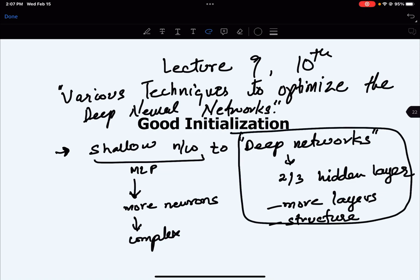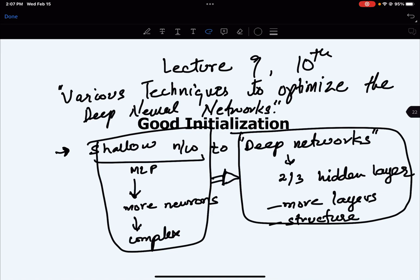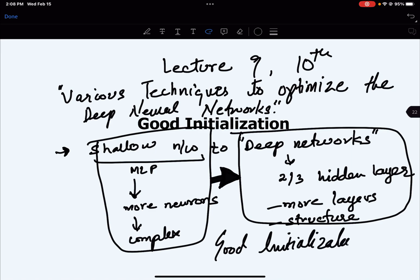When we are moving from shallow networks to deep networks, there are some problems or issues that we encounter. This lecture and the previous lecture are focused on the problems and what can be the solutions. Today we are going to study what is the role of code initialization on deep networks.